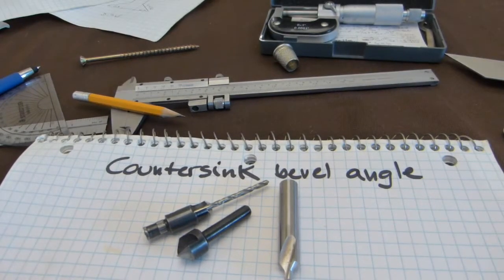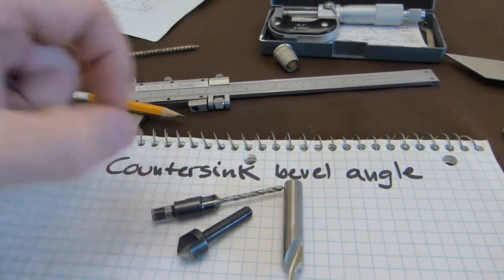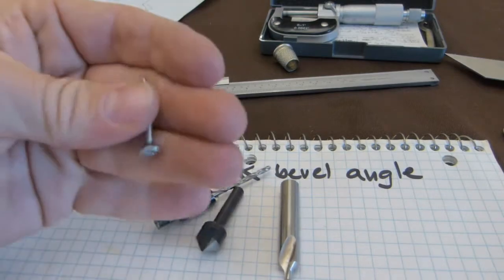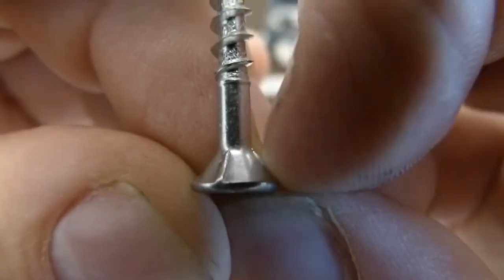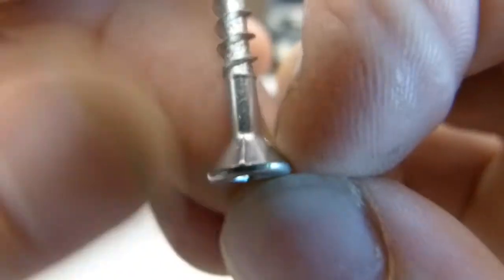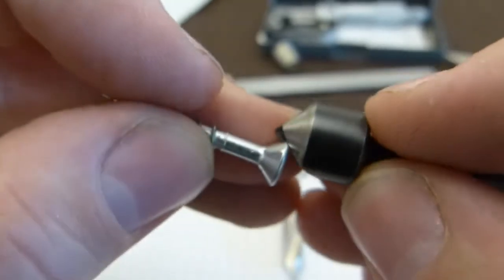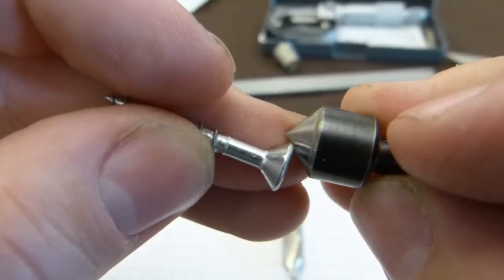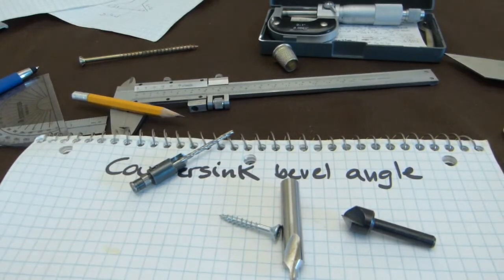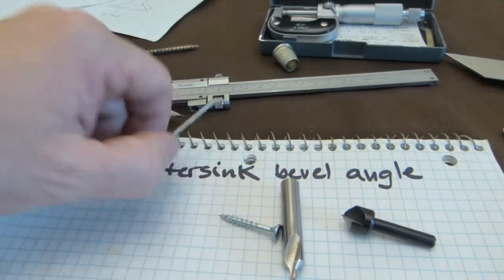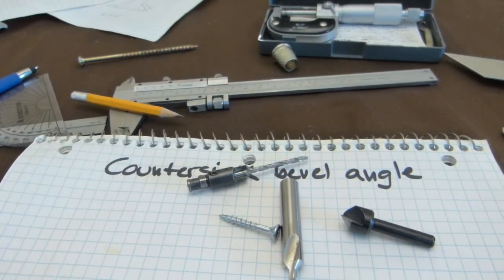Countersink bevel angle is important. Ideally the countersink bit is formed in a shape that matches the bevel angle on the flat head screw. This bevel angle, this sloped part, the angles on the bit and on the screw should ideally match, but they often don't. Not because they are badly manufactured, but because there are different screw standards.